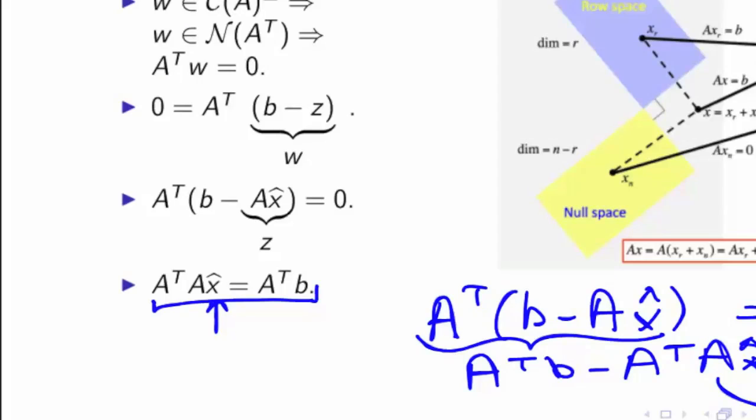Now, this equation here is known as the normal equation. And solving the linear least squares problem by solving this equation right here is known as the method of normal equations.